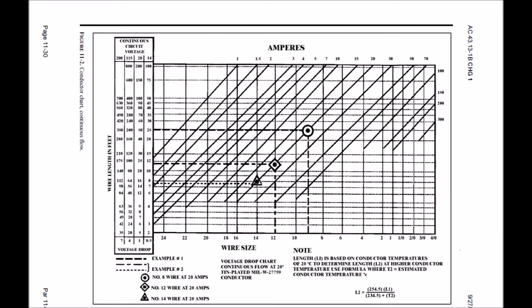Most aircraft home builders will be familiar with the chart I'm showing you. This is from AC 43.13. This is the continuous flow conductor chart. There is also an intermittent flow conductor chart, and you use it the same way. I'm going to work with the continuous flow chart here to give you an idea how this all works.